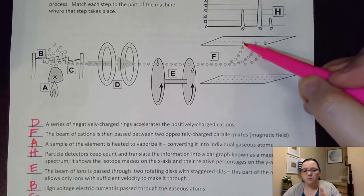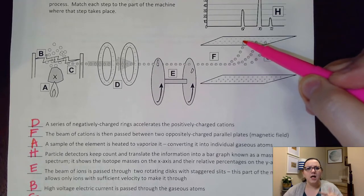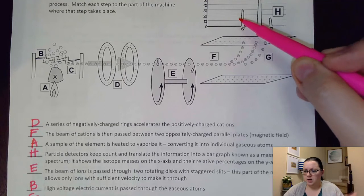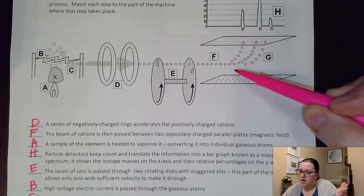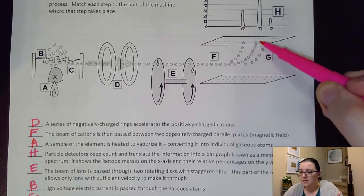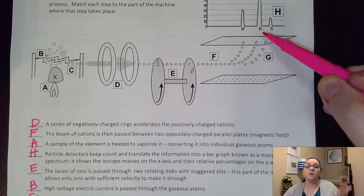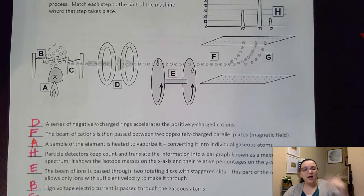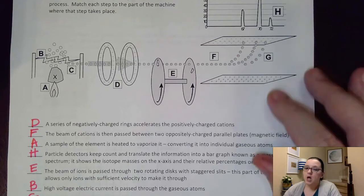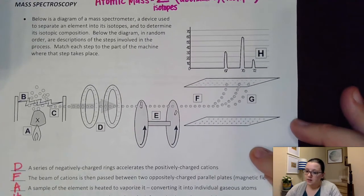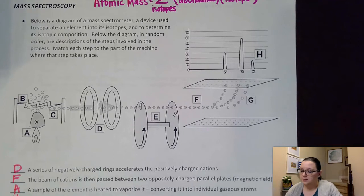And this spot represents a mass of 67. But then, I have more particles hitting this spot on the plate, which represents a mass of 70. So each spot on the plate gets counted how many particles are hitting in that particular spot. And by what spot they're hitting, we know what the mass is. So then that ends up creating this lovely graph of information that we see up here.